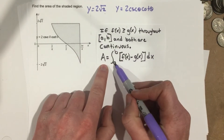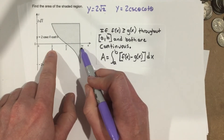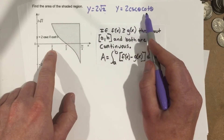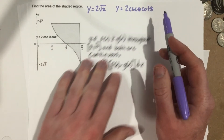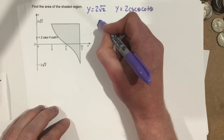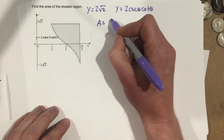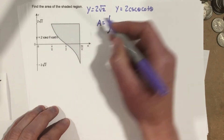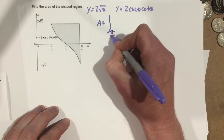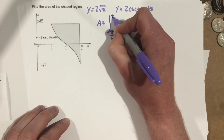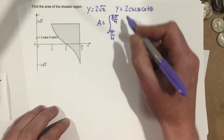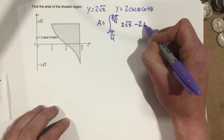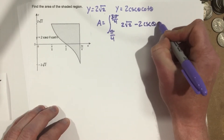So we're going to integrate from pi over 4 to 3 pi over 4, and we're going to do that for 2 root 2 minus 2 cosecant theta cotangent theta. The area is going to equal the integral from pi over 4, because that's the farthest x value to the left, to 3 pi over 4, because that's the farthest x value to the right, of 2 root 2 minus 2 cosecant theta cotangent theta.